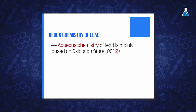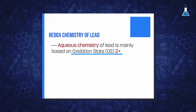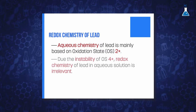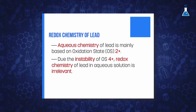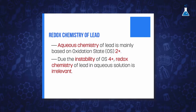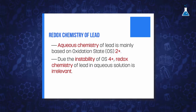One important thing to remark is that the aqueous chemistry of lead is mainly based on the oxidation state 2+, whilst 4+ ions are unstable. This is an important fact because reduction reactions of lead in aqueous solution are of minor importance.